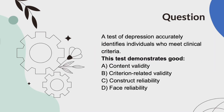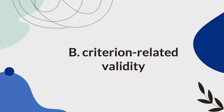A test of depression accurately identifies individuals who meet clinical criteria. This test demonstrates good... A, content validity. B, criterion-related validity. C, construct reliability. Or D, face reliability. And the answer is B, criterion-related validity.